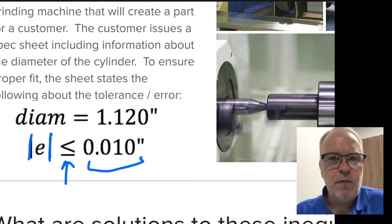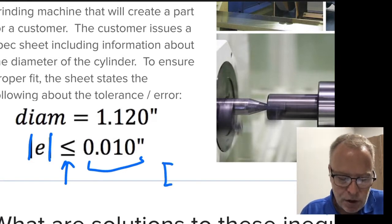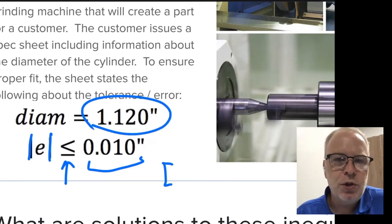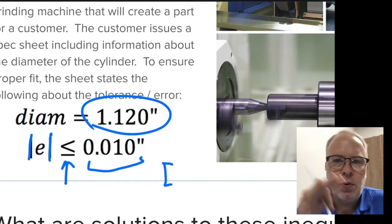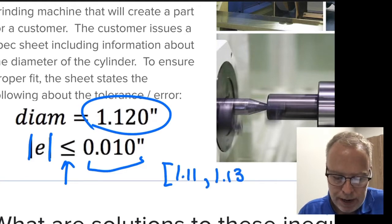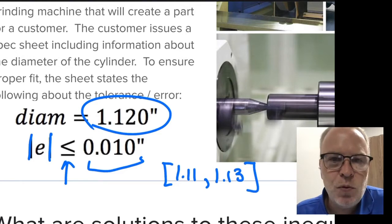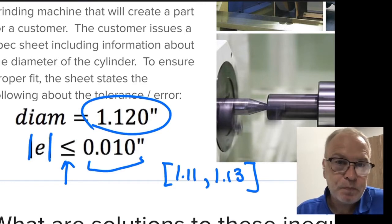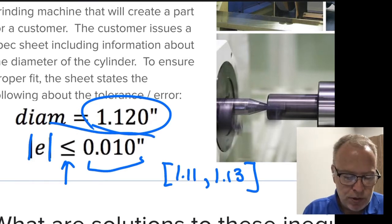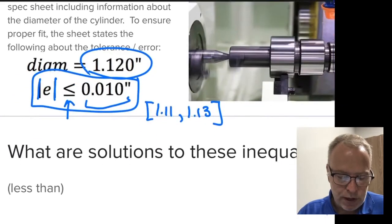So this is sort of a between question because the diameter was supposed to be 1.12 in a perfect world. And if I could go plus or minus 0.01, that would be 1.11 all the way up to 1.13. Anything in that region would be a good part, and I could start working on the next part. If there was a problem, then I had to adjust the machine. So this is an example of an absolute value inequality, and this was actually a between statement.